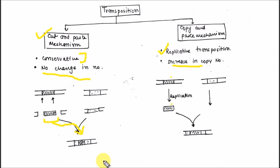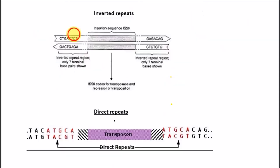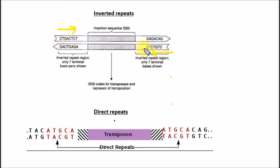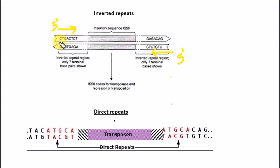Let's look at inverted repeats and direct repeats. In inverted repeats, reading in the 5' to 3' direction on one strand, you get a sequence such as CTGACT. The same sequence is present in the opposite or complementary strand also reading 5' to 3'. When the same sequence is present in the complementary strand in the 5' to 3' direction, these are called inverted repeats.